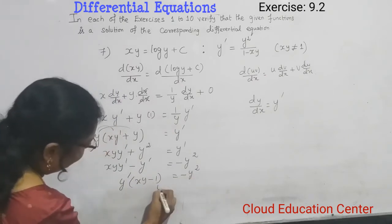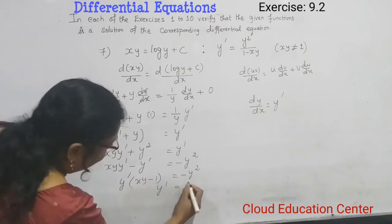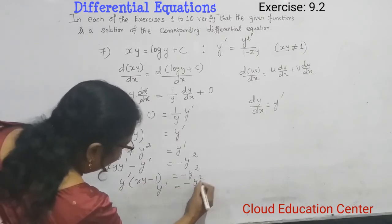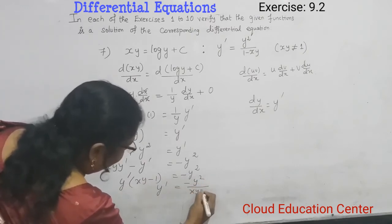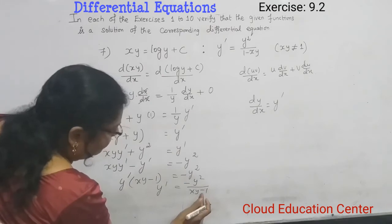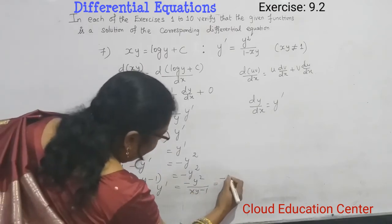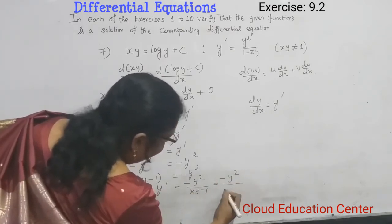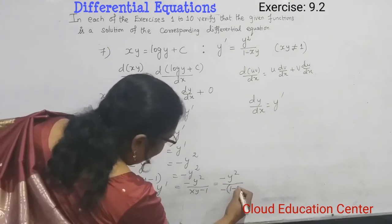Here, we want only y dash, we'll keep y dash, other things we take to the right-hand side. y dash equals minus y square divided by xy minus 1. Now we will take common minus from this. So we get minus y square divided by minus 1 minus xy.